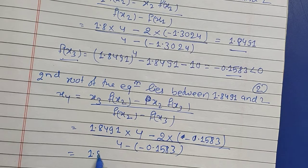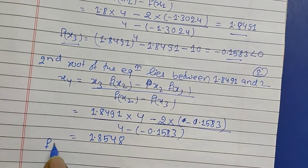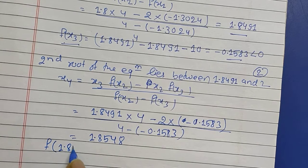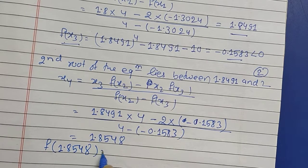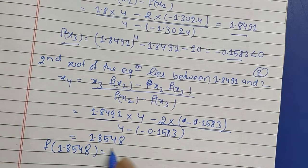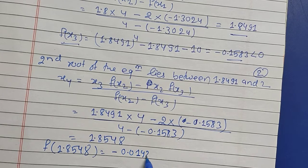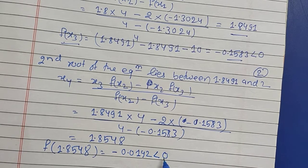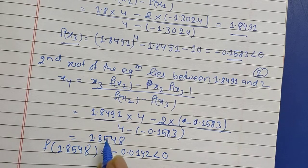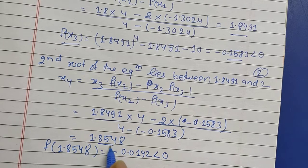Solving this gives x4 = 1.8548. Now find f(x4) by substituting 1.8548 into the equation, which gives −0.0192, less than zero. We need to continue two to three more steps until three decimal places converge.